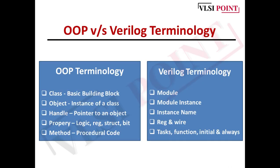Now let's compare OOP versus Verilog terminology. A class is a basic building block containing routines and variables, analogous to modules in Verilog. An object is an instance of a class — just as in Verilog you instantiate a module to use it, in OOP you create an object from a class to use it.